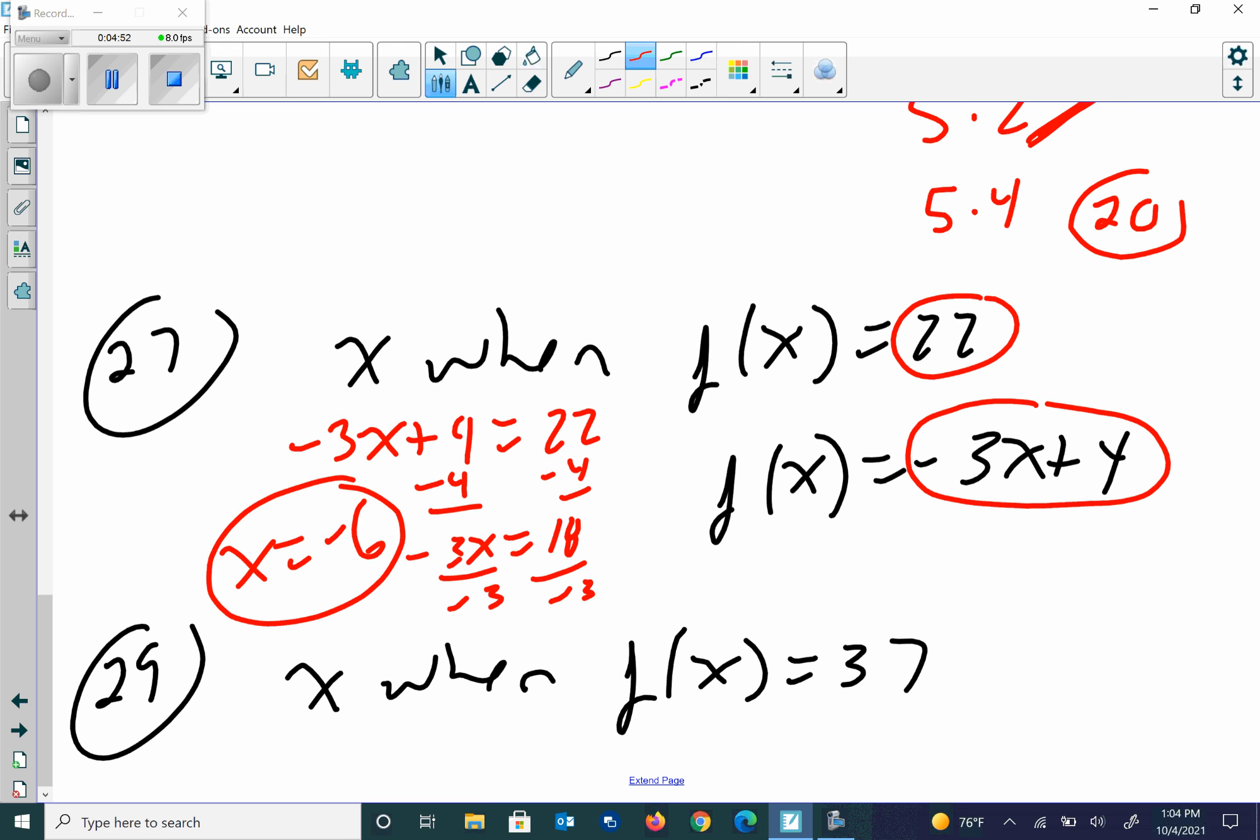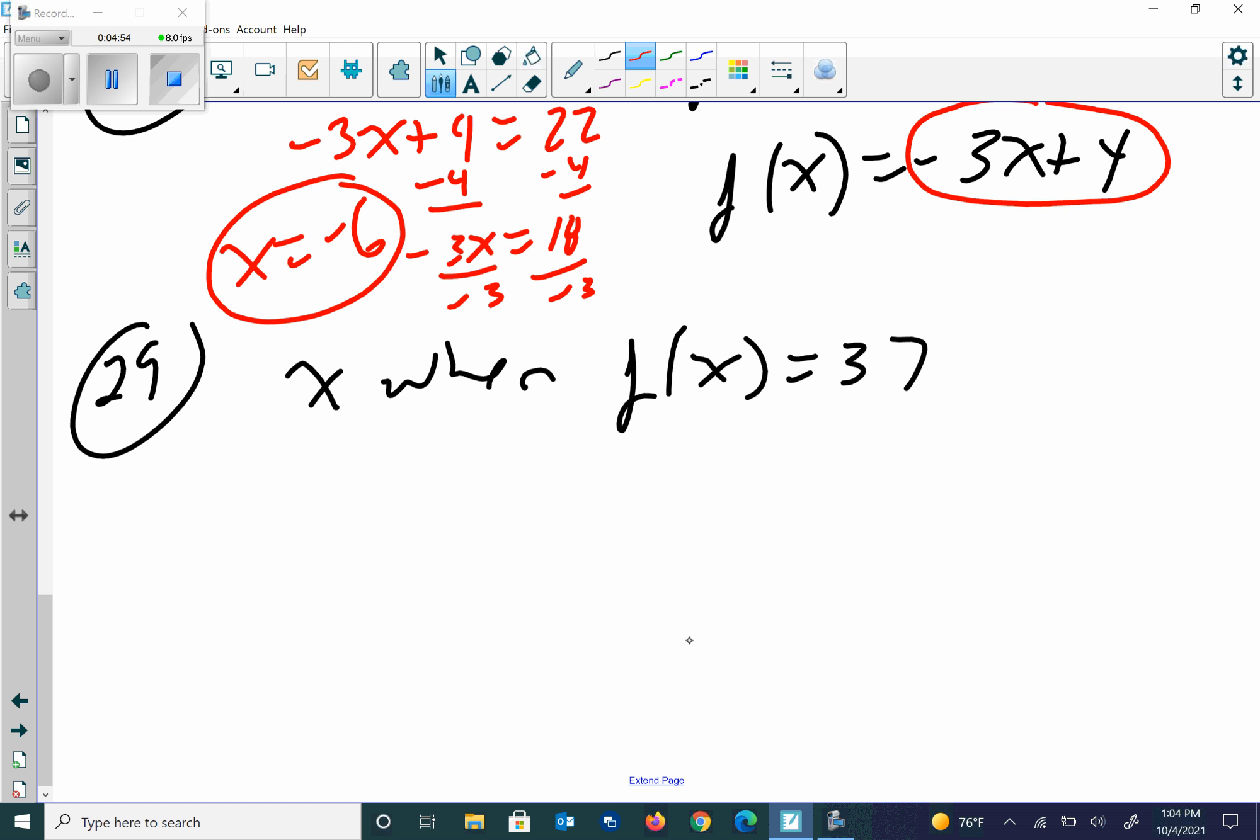And then 29, I also want to set it equal. We're using the f of x equation. So I'm going to go negative 3x plus 4 equals 37. I'm going to subtract 4 from both sides. Those cancel. So negative 3x is equal to 33. Divide each side by negative 3. So it looks like I'm going to get x equals negative 11 once I do that.